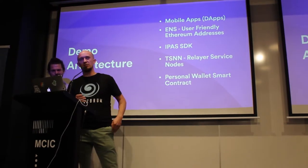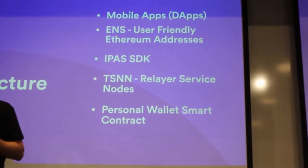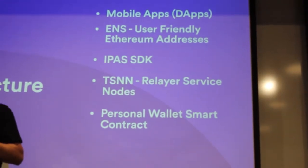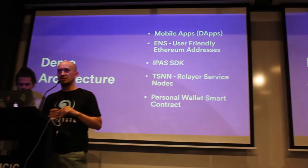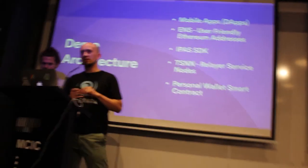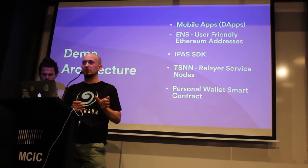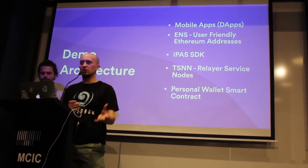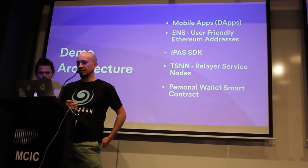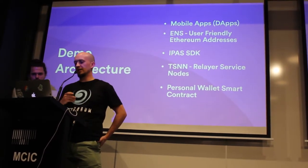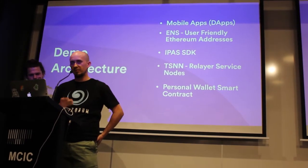Here are several components of the demo that we'll show you. First component is the mobile application we have, but it can be any type of application, which will integrate our SDK. We're using ENS, which is Ethereum Name Service — something like the domain name system on the internet. Instead of typing in IP addresses of websites, you're typing in the names themselves, like Google.com, which get resolved to the actual IP address. ENS is the same thing, but for Ethereum. The next component will be our SDK. And then I'll talk about relayers and the personal wallet smart contract.